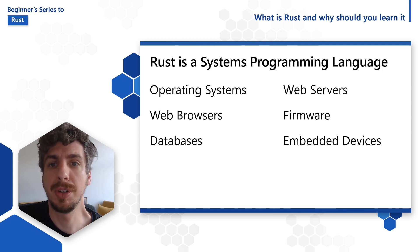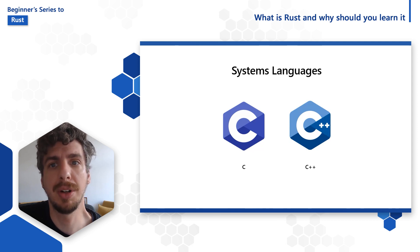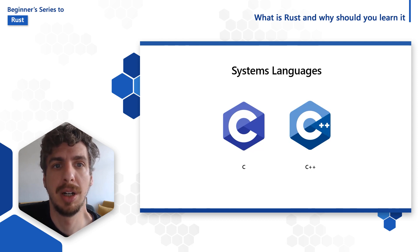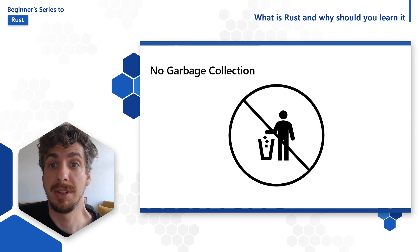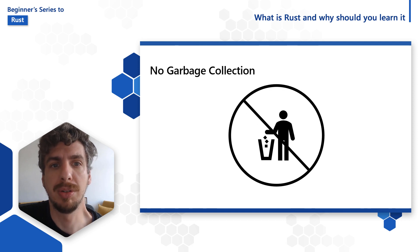Such programs have traditionally been written in languages like C and C++, because these programs require a high level of control over machine resources that other languages like JavaScript, Python, and even C# or Go don't typically allow for. Rust has many characteristics similar to C and C++ that allow users this high level of control. The most apparent is that, like C and C++ and unlike almost all other languages, Rust does not require the use of garbage collection.